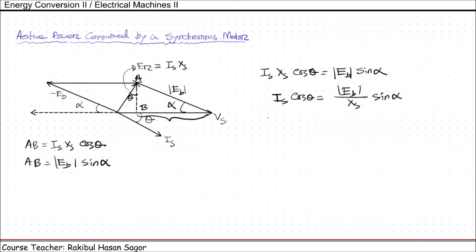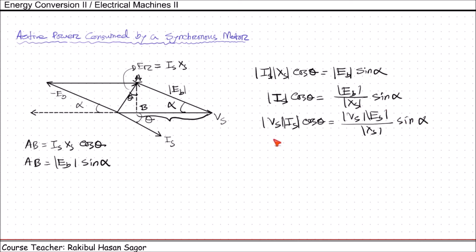Since Is·cos theta is the real input, and multiplying both sides by Vs, we can say P input equals Vs·Eb over Xs times sin alpha. This is the active power consumed. Under this circumstance, the P input maximum will be equal to Vs·Eb over Xs.